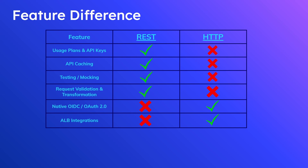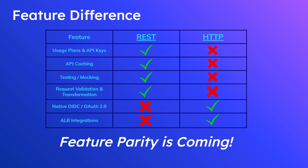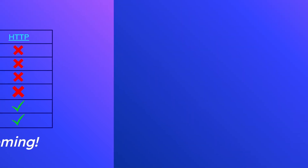These are some of the key differences, but feature parity is coming — hopefully within about six months to a year, all the features currently missing from HTTP will be added. AWS is committed to continuing to invest in HTTP API functionality. There are also a couple of other good things to know about the new HTTP API experience.